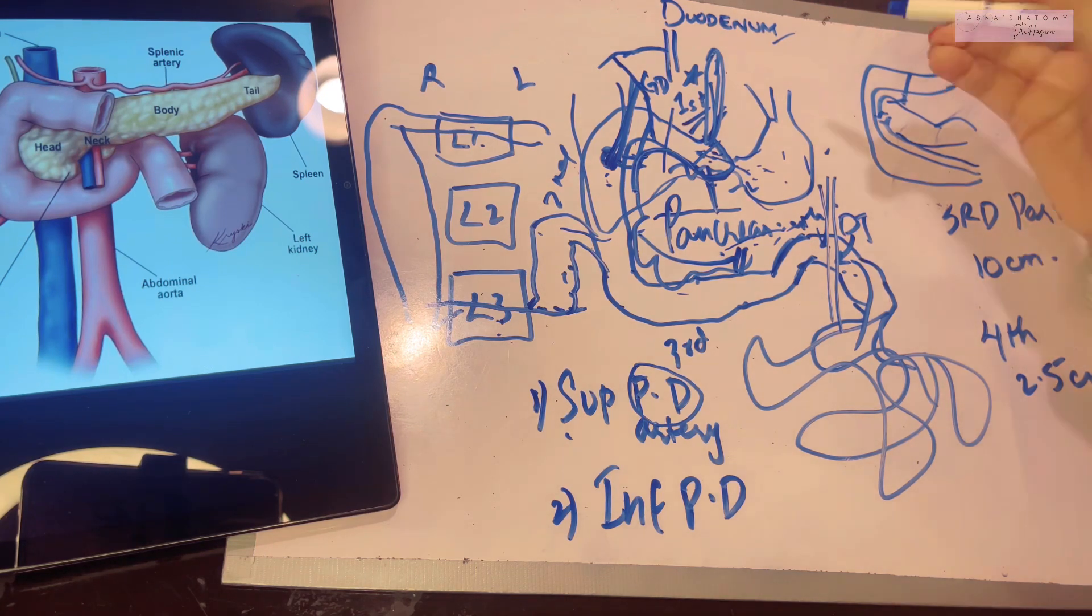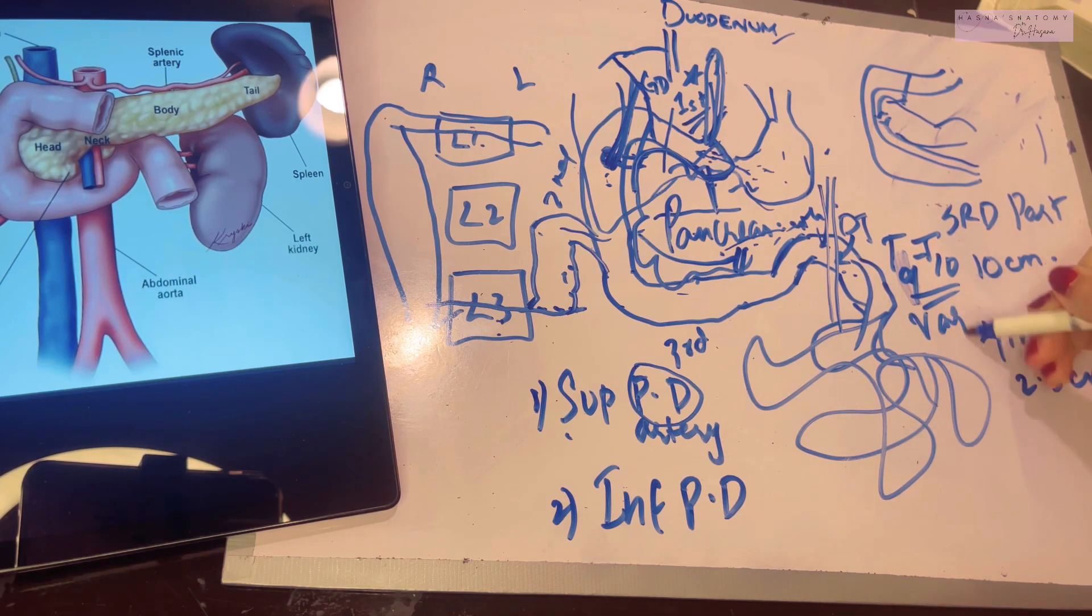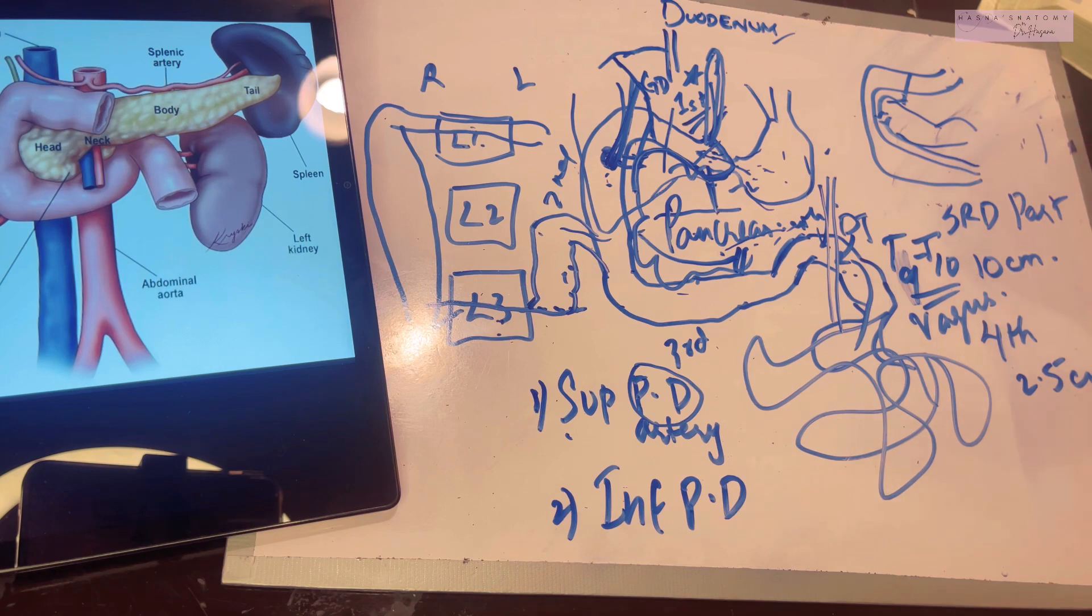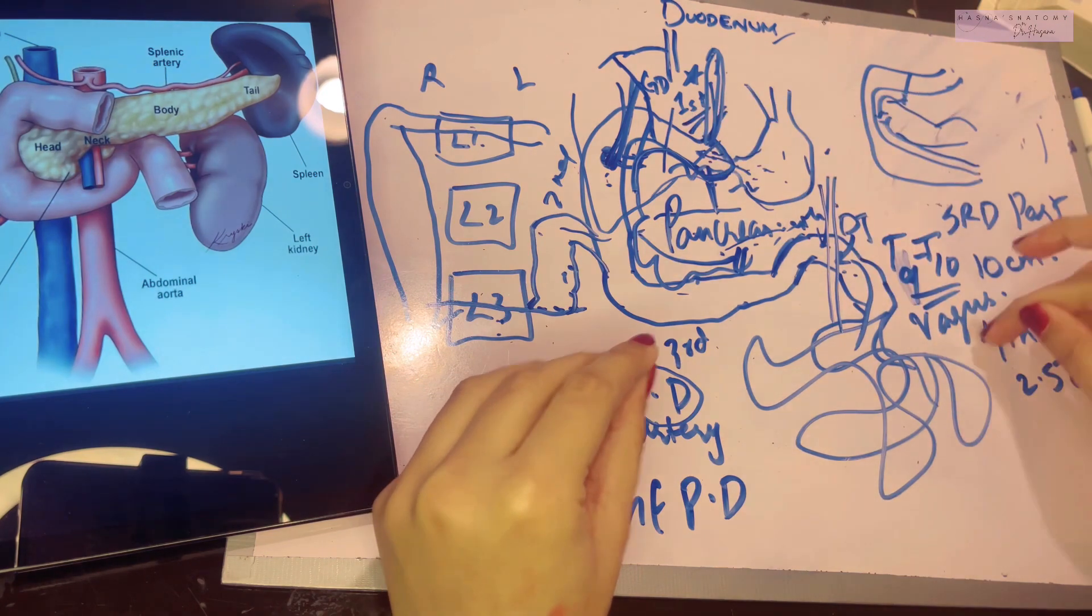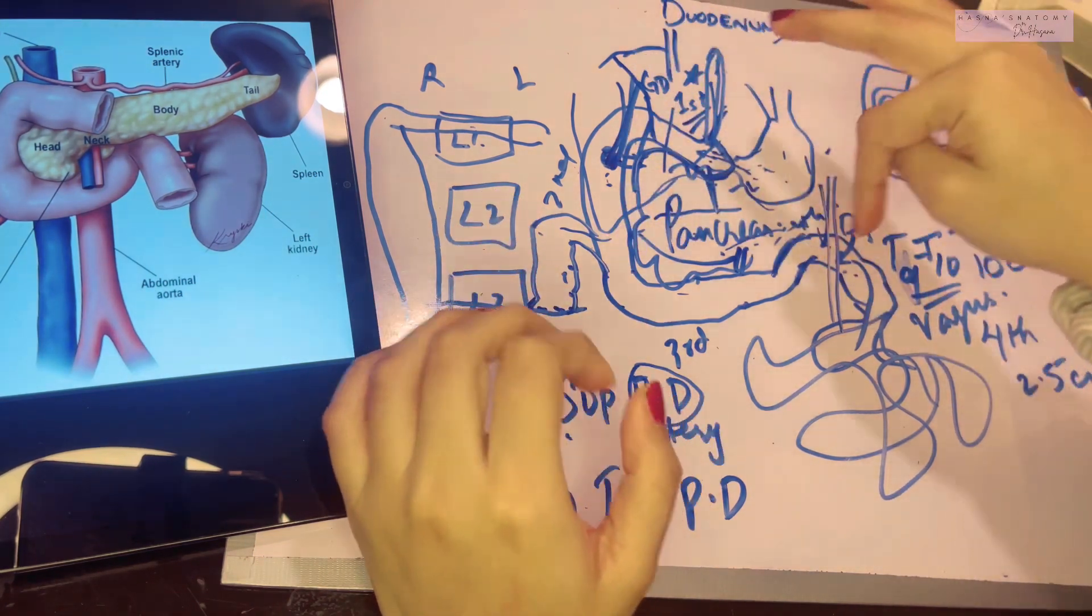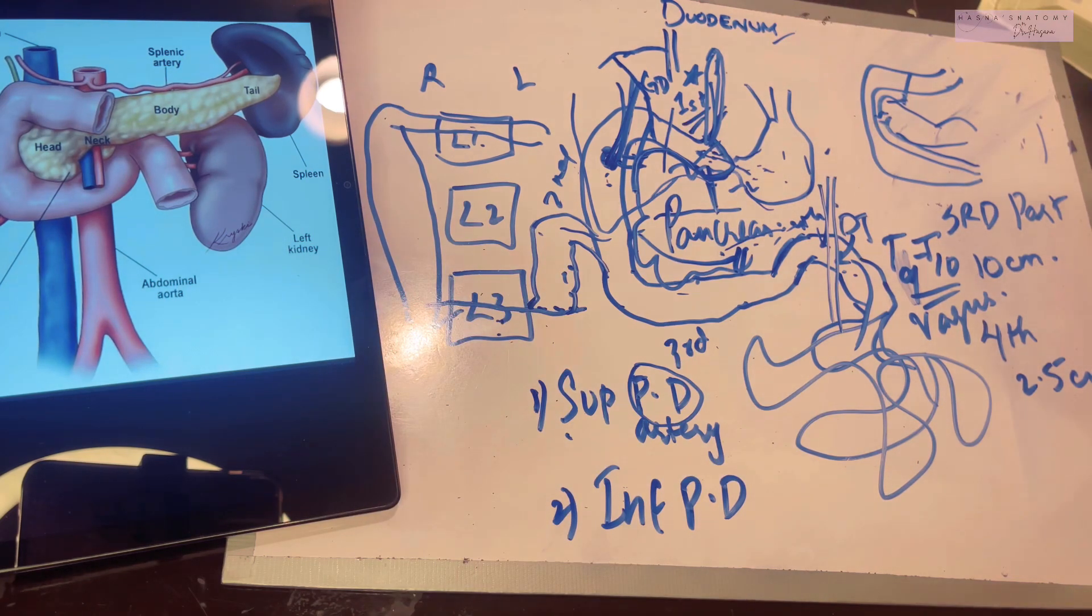Then we have the nerve supply. The nerve supply of the duodenum is T9 to T10 sympathetic segments, and the vagus nerve gives it parasympathetic supply. Always remember, in the entire small intestine, the sympathetic system is inhibitory to the musculature. Parasympathetic makes the peristalsis happen. It helps with the secretion. This is very important. We've already studied this in the stomach.